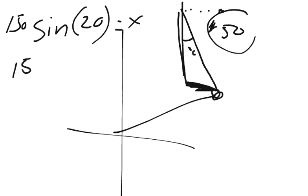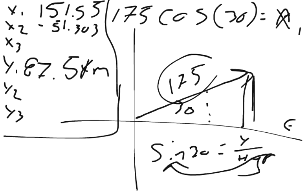Then I can take 150 cosine of 20, and that should equal my y value, because cosine of theta equals adjacent, and this is adjacent to the angle, adjacent over hypotenuse. So that means that my y2 is 140.95.